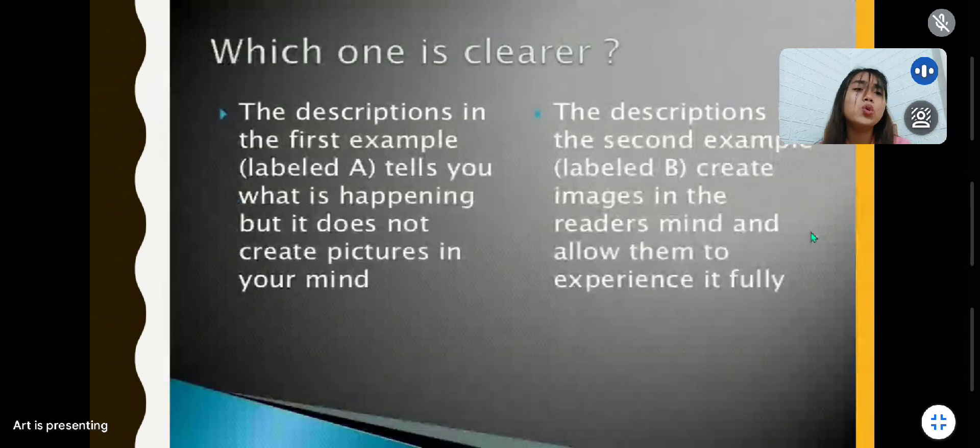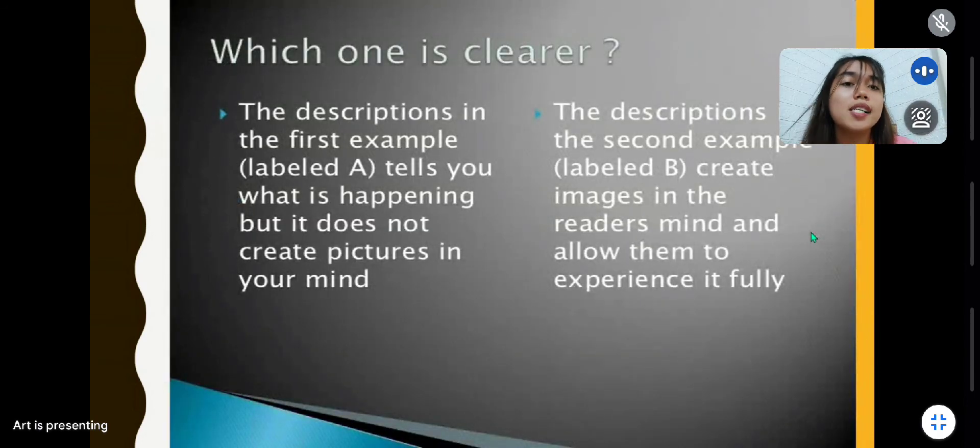Next is, which one is clearer? So the evaluation of the show not tell scenarios. The description in the first example, or labeled A, tells you what is happening but it does not create pictures in your mind. While the descriptions in the second example, labeled B, create images in the reader's mind and allow them to experience it fully. So have you seen the difference? The descriptions in the first example are just merely plain descriptions, simple descriptions. But the descriptions in the second examples, they create images in the reader's mind. Of course, just like the rain attacked the galvanized roof and the windows. And allow them to experience it fully.